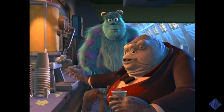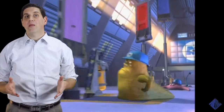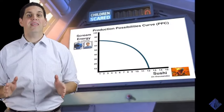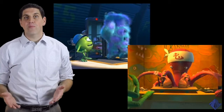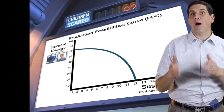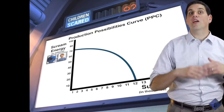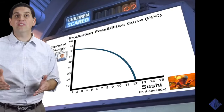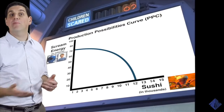This company has been in my family for three generations. Economists like to explain the idea of scarcity by drawing something called the Production Possibilities Curve. The PPC is a graph that shows how an economy can use its resources to produce two different goods. So let's assume that Monstropolis can only produce two different products: Scream Energy and Sushi. This graph shows the production possibilities — the different combinations of the two goods that can be produced using all of their resources.